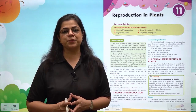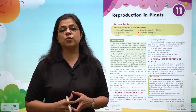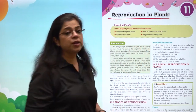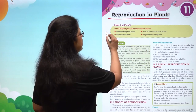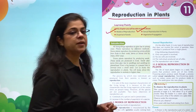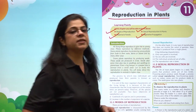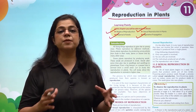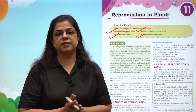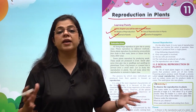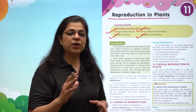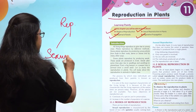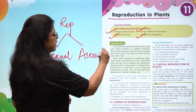This reproduction helps in the continuation of life on earth from one generation to another. In this chapter, we are going to understand how reproduction in plants takes place — the different modes of reproduction, sexual reproduction, dispersal of seeds, and vegetative propagation. Reproduction is a very essential process that keeps life on earth continuous. Reproduction is of two kinds: sexual reproduction and asexual reproduction.